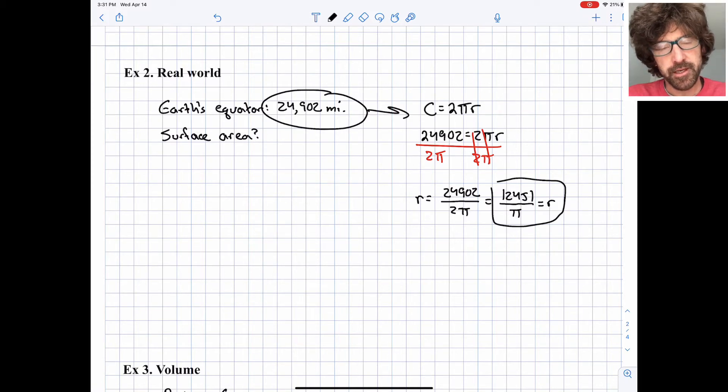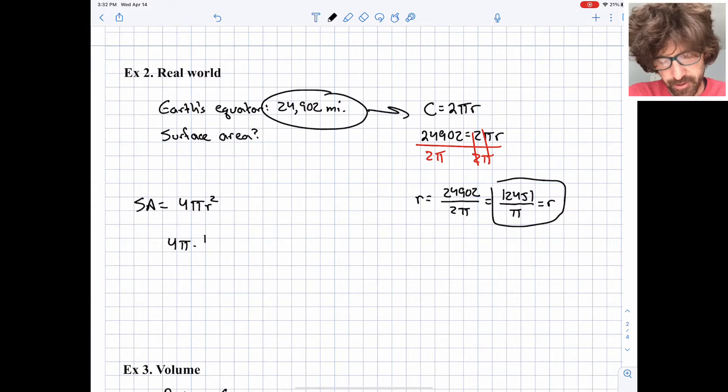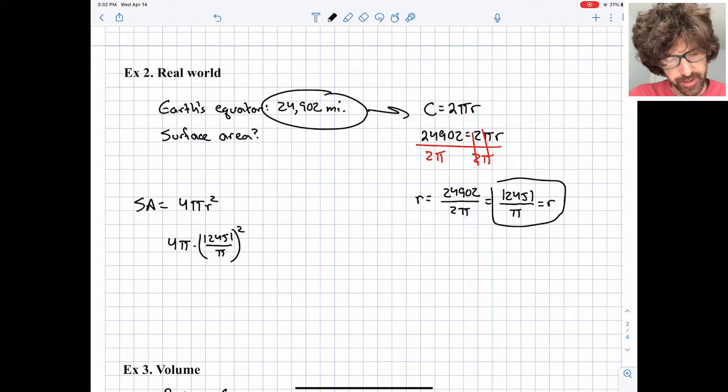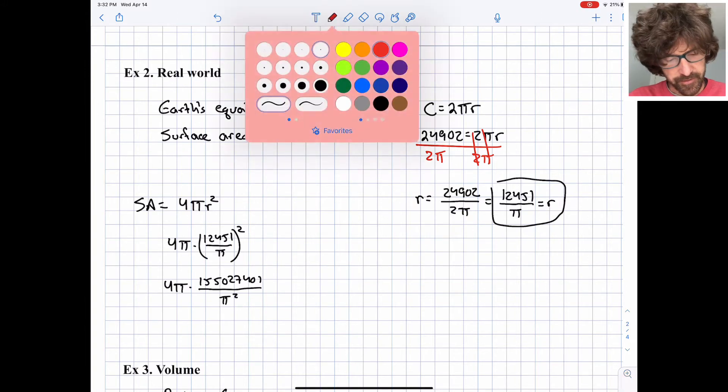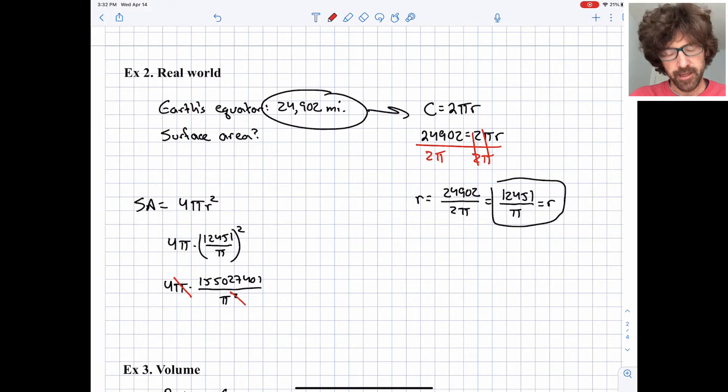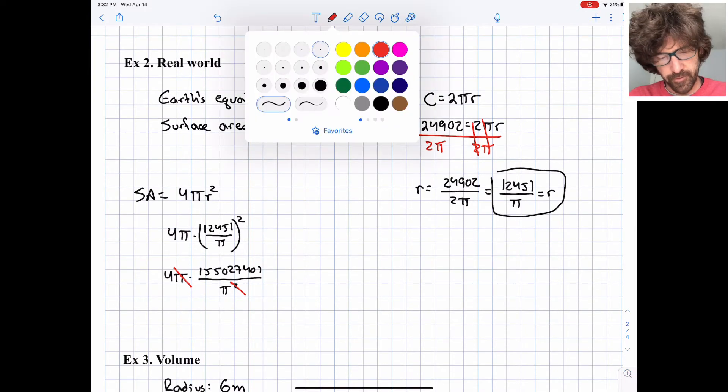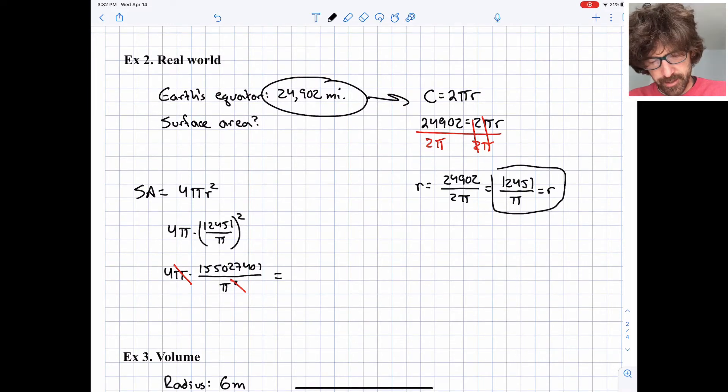So let's put this into the equation for surface area. Surface area is 4πr². So we have 4 times π times (12,451/π)². I'm going to apply that squared to each of the pieces in the parentheses. 4 times π, 12,451² is 155,027,401 over π². We can do a little bit of simplifying. This π cancels with one of the π's down below, and then I'll multiply that numerator by the 4 as well.